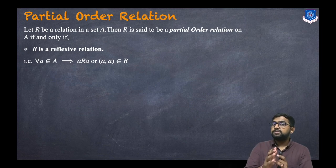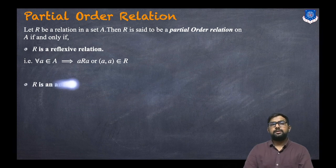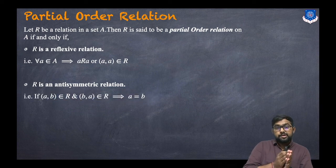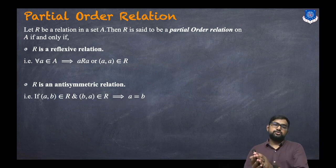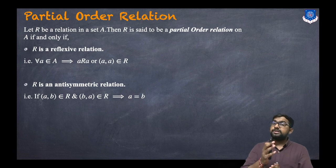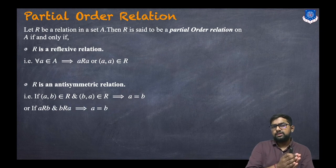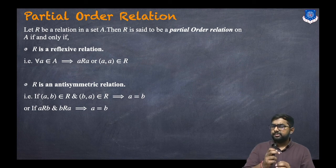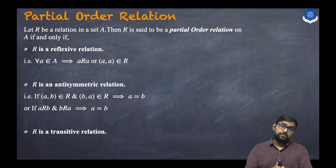The second condition is R must be an anti-symmetric relation. For anti-symmetricity, if (A, B) belongs to R and (B, A) belongs to R, then A and B must be the same — that is, A equals B. If A is related to B and B is related to A, then A and B have to be the same.